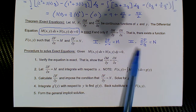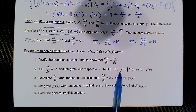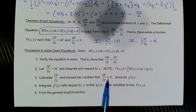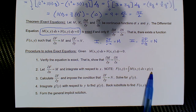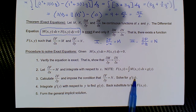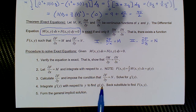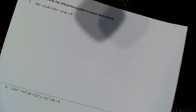Then we take the partial of this f(x, y) with respect to y and impose the second condition. At that point we'll be able to solve for g′(y), because when we take the derivative of f(x, y), the g(y) becomes g′(y). We'll be able to solve for it, then integrate it with respect to y to find g(y), and back substitute to find the function we're looking for.